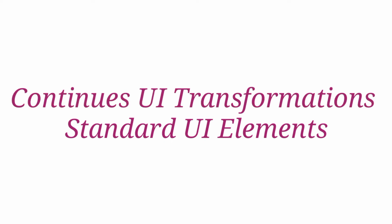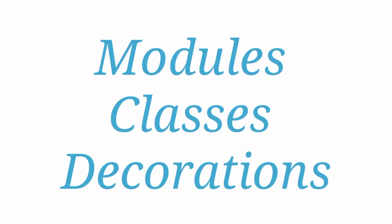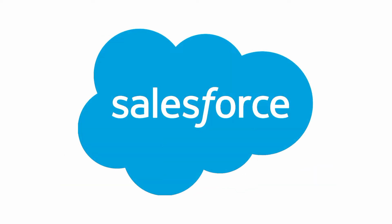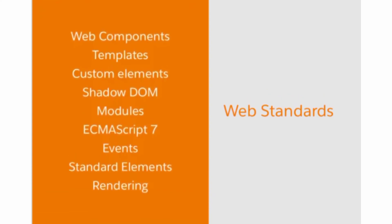A second shortcoming was that standard UI elements could not be altered to create customized components, which was the biggest issue since modern enterprises need customized user experiences. A third shortcoming was that client-side technologies like modules, classes, decorators, and promises could not be written for large-scale organizations. To address this, Salesforce launched Lightning Web Components, built to offer a platform for creating large-scale enterprise apps using modern web components — providing custom elements, templates, Shadow DOM, decorators, modules, and rendering.